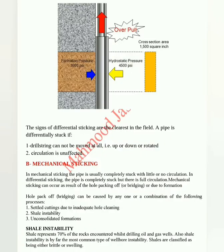The signs of differential sticking are the clearest in the field. A pipe is differentially stuck if: 1. The drill string cannot be moved at all, i.e. up, down, or rotated. 2. Circulation is unaffected.